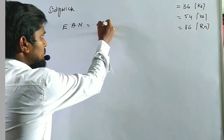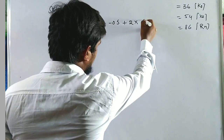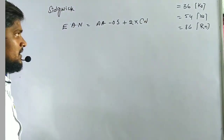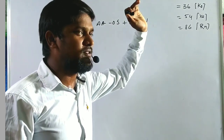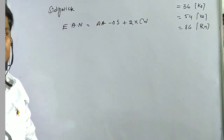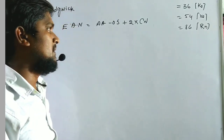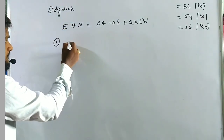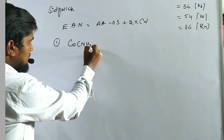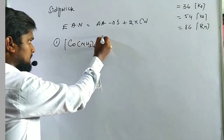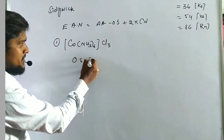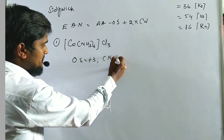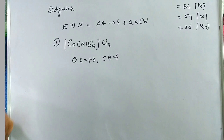Now we will solve some problems to calculate the effective atomic number. The formula is: EAN = actual atomic number − oxidation state + 2 × coordination number. The first example is [Co(NH3)6]Cl3. Here, the oxidation state of cobalt is +3 and the coordination number is 6.